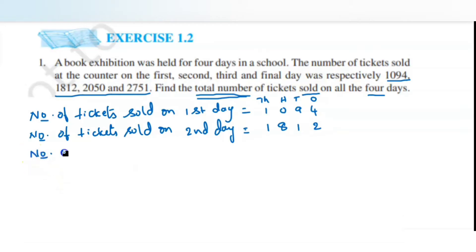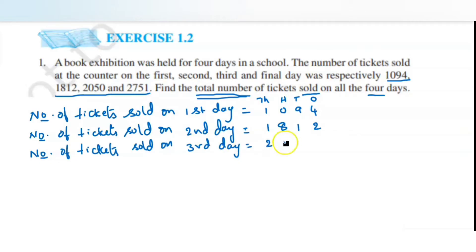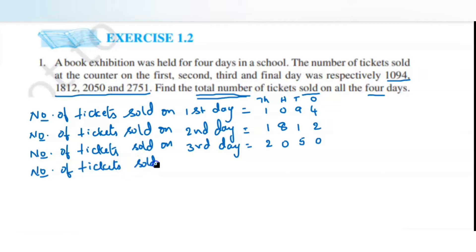Write the number of tickets sold on the third day, which is 2050 — 2 in the thousands place, 0 in hundreds, 5 in tens, 0 in ones. Then write the number of tickets sold on the fourth day, which is 2751. Arrange the numbers carefully in order so that it becomes easy to add.